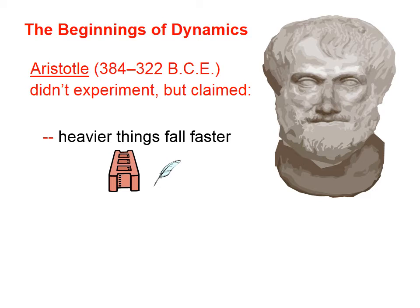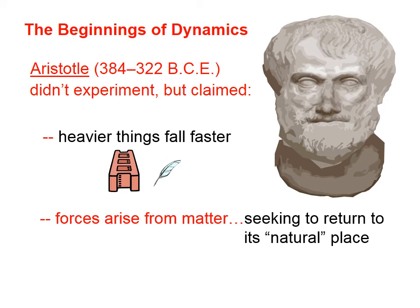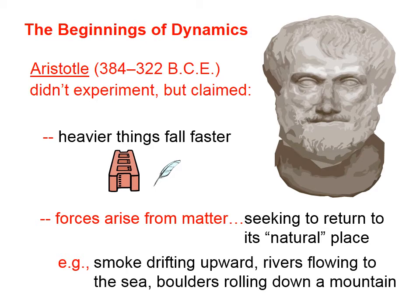In physics, if we have a theory that doesn't adequately explain certain phenomena, then we have to modify the theory. Aristotle didn't do that. Among other things, he also claimed that forces arise from matter seeking to return to its natural place. For example, smoke would drift upward because smoke is mostly air, and air is upward. Waters originated in the sea, so a river flows to the sea. Boulders roll down a mountain because the earth is at the bottom. A little primitive thinking from our point of view today, but at least it was a start.